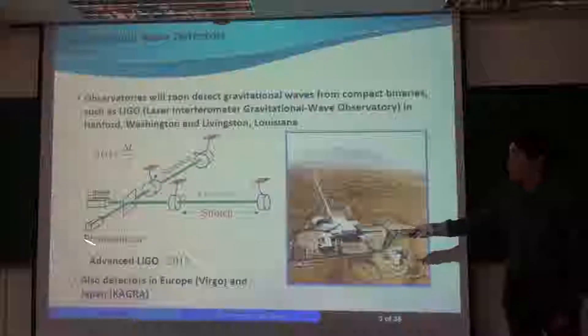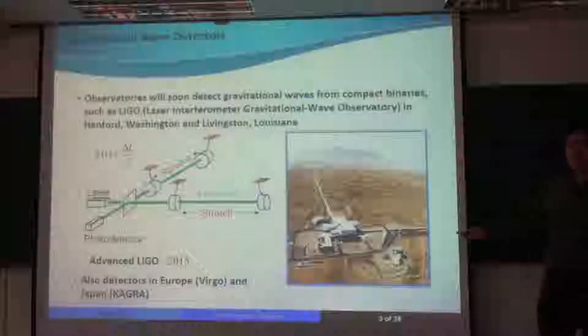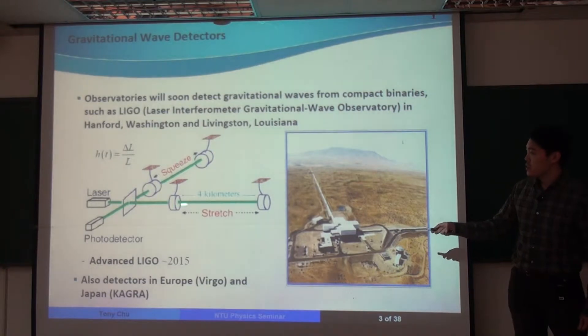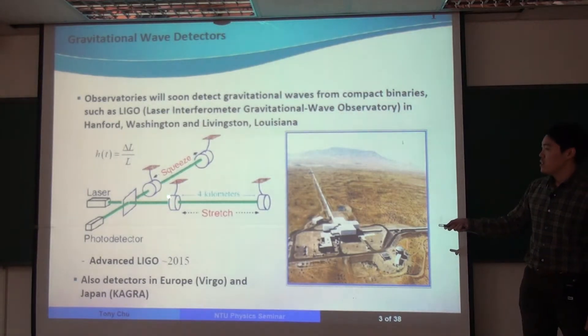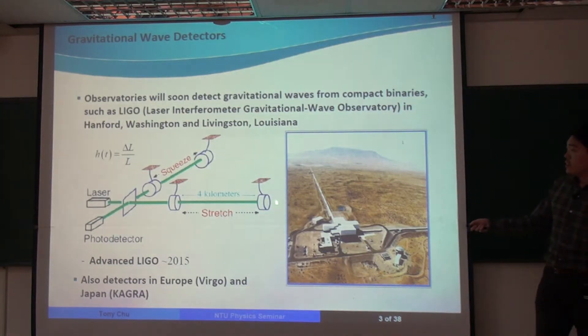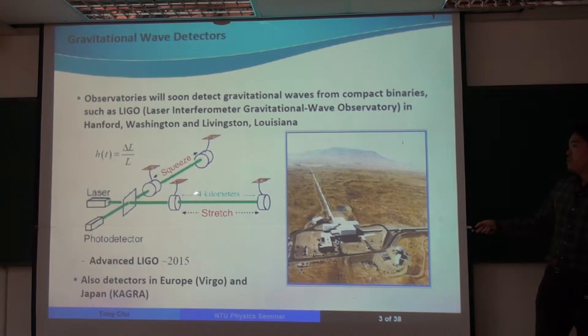This picture shows what the interferometer looks like in the Hanford site. It basically consists of two very long arms in the shape of an L. Here's a schematic diagram of LIGO. You have a laser beam that goes in, it can split, and travels down the two arms. Each arm is very long, four kilometers.